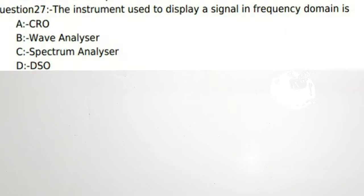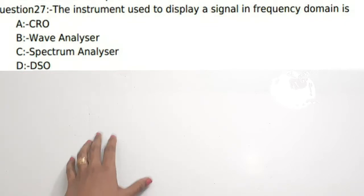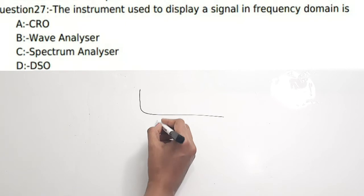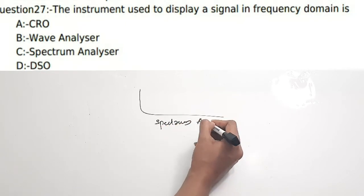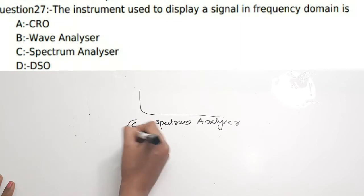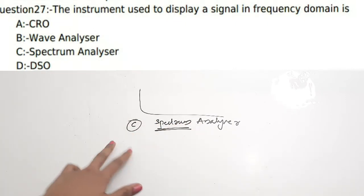Fourth question: The instrument used to display a signal in frequency domain is — A) CRO, B) Wave analyzer, C) Spectrum analyzer, D) DSO. CRO and DSO are used to display waveforms directly, but if you want to display a signal in the frequency domain it is a spectrum analyzer. The spectrum analyzer is correct because spectrum always stands for the term frequency. Correct answer is C.